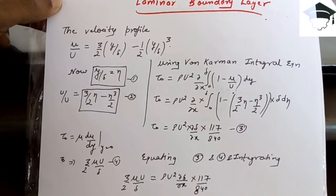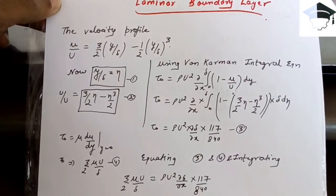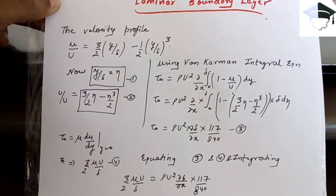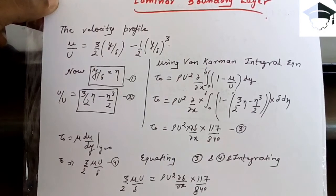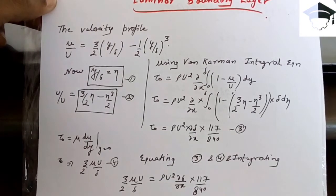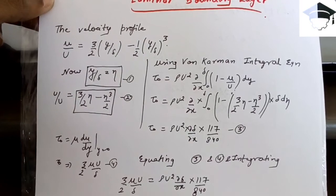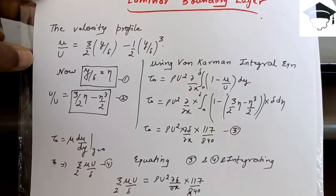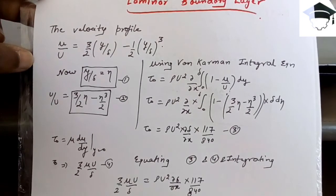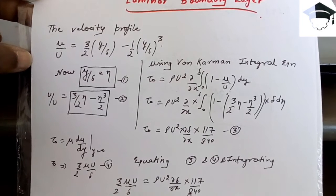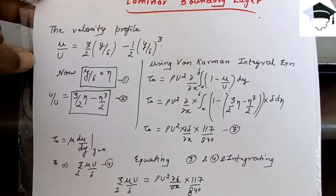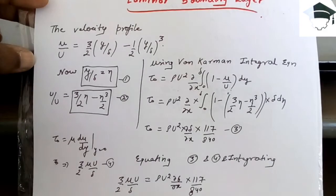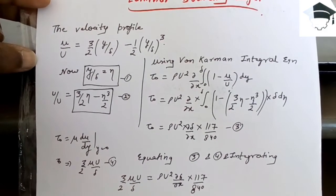Also, if you have not watched the previous video regarding the boundary layer theory, I suggest you first watch that video and then come back. Now starting with the video: the velocity profile for the laminar boundary layer is given by u/U = (3/2)(y/δ) − (1/2)(y/δ)³, where y is the distance from the surface in the y-direction, δ is the laminar boundary layer thickness, u is the local velocity, and U is the free stream velocity.